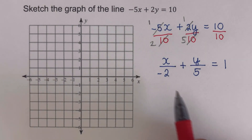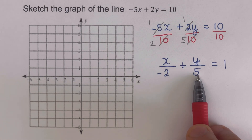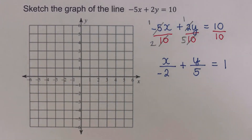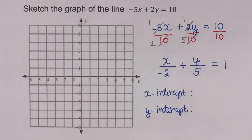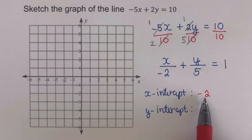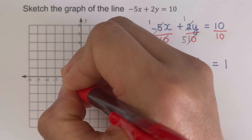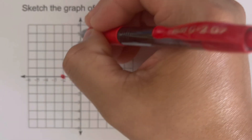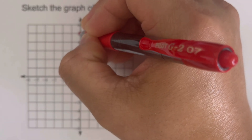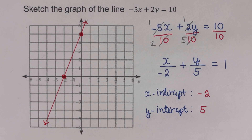This double intercept form tells us the x-intercept is negative two and the y-intercept is five. We plot negative two on the x-axis and five on the y-axis, then sketch the line through those two points. This is the graph of our equation.